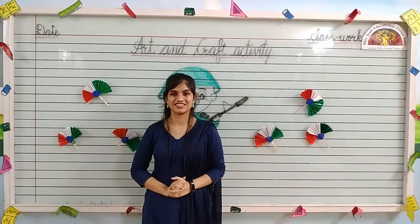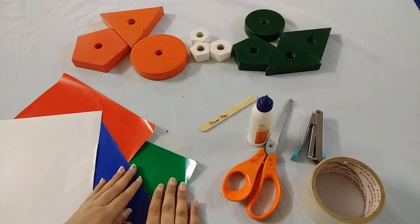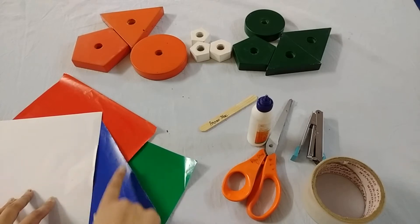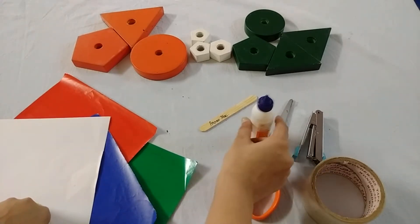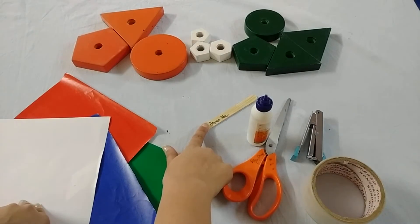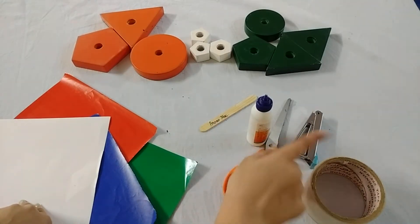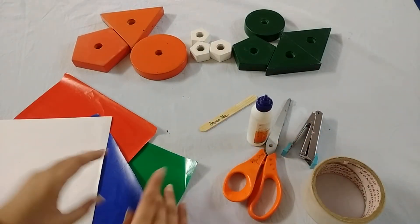Okay kids, let's start. For this activity, we need glaze papers, dark blue, dark green, orange and white sheet, scissors, glue, ice cream stick, stepler and cello tape. Let's start.